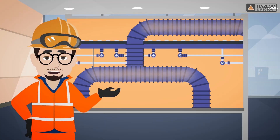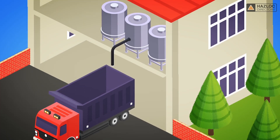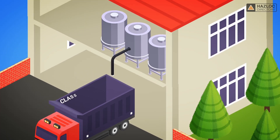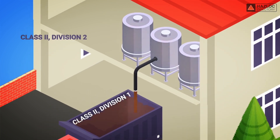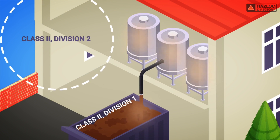It is unlikely that an explosive dust-air mixture will occur in this location. An explosive atmosphere might only be expected in the event of malfunctions, such as those which result in whirled up dust. Division 2 refers to the entire area where the dusts may be suspended in the air if processing equipment malfunctions.